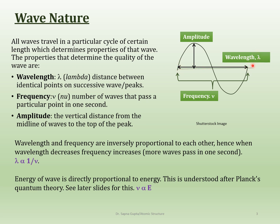Wavelength is given by the symbol lambda. Then you have something called amplitude, which is the height of that crest — that amplitude will be the same for a given wavelength. And then there is something called frequency. What is frequency? It is the number of wavelengths that can pass through in a second.